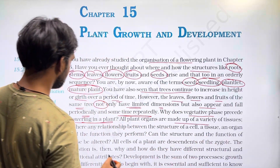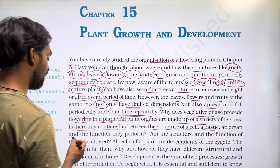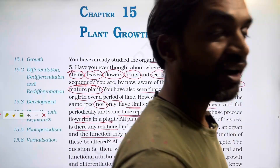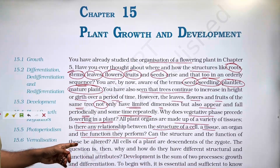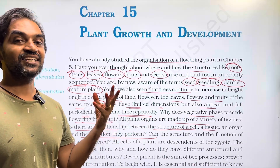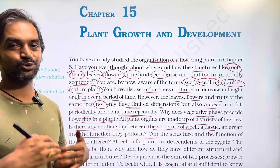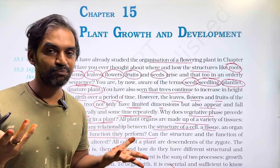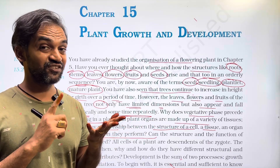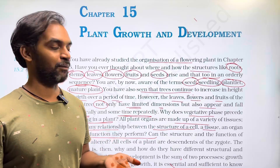All plant organs are made up of a variety of tissues. Is there any relationship between the structure of the cell, tissue, and organ and the functions they perform? Yes — the vegetative phase of root, stem, and leaf provides a strong foundation. Growth and photosynthesis food supply from roots, stems, and leaves are important, and then the reproductive phase produces flower, fruit, seed, and other reproductive structures.